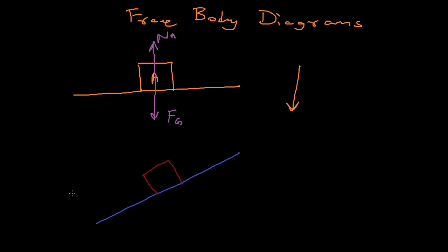The block is not moving, but the plane is inclined, so the block is supposed to move in this direction — but it doesn't. There must be a frictional force acting in the opposite direction countering gravity. If this surface were smooth, like glass or a surface with lubricant, the block would slide down due to gravity. But it doesn't move because there's a frictional force acting in the opposite direction.